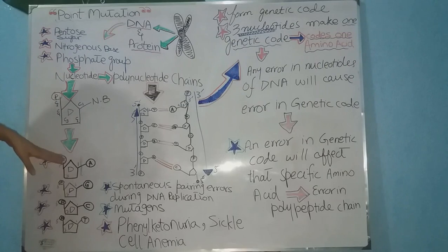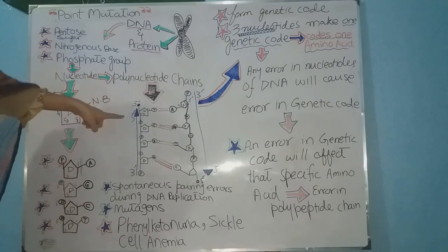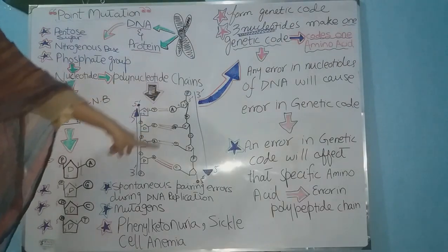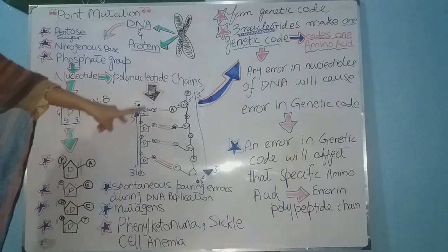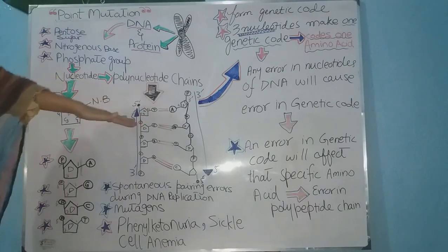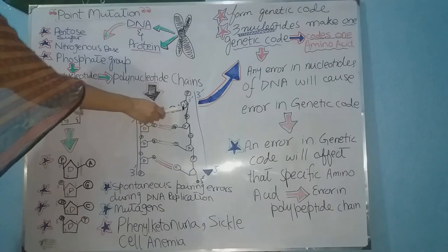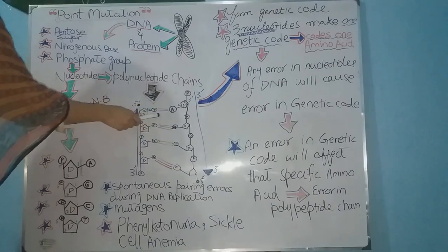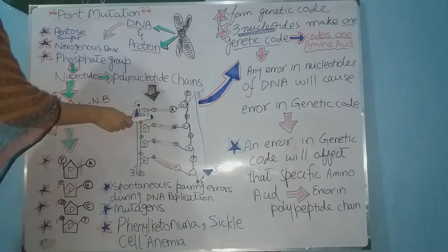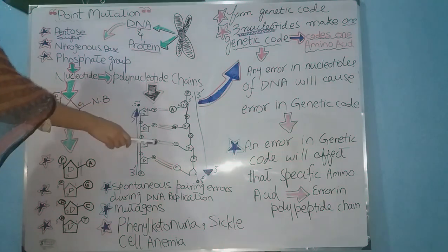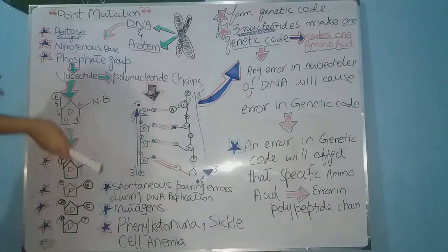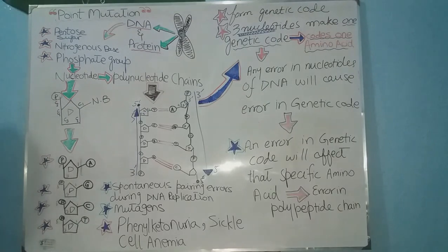These four types of nucleotides join together to form two polynucleotide chains. The nitrogenous bases of these two chains make bonds: adenine and thymine form a double bond, while guanine and cytosine form a triple bond. This gives us the structure of DNA. Up until now we have discussed the structure of DNA.